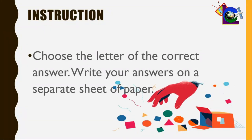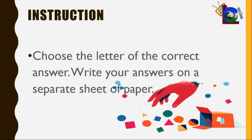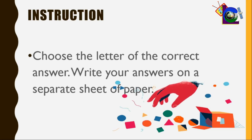Before we head on to our lesson, you will answer a pre-test. Don't worry — your scores will not be recorded. This is just to check how far you've gone in our lesson today. Here are the instructions: Choose the letter that bears the right answer. Write your answers on a separate sheet of paper. Do not leave any item unanswered. You will be given 5 seconds for every item. If that's clear, let's start.